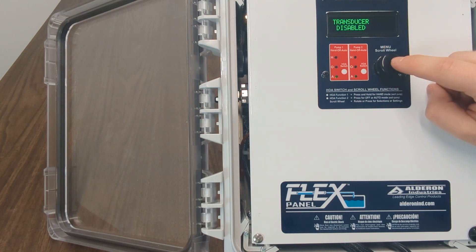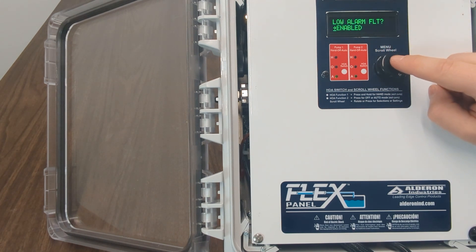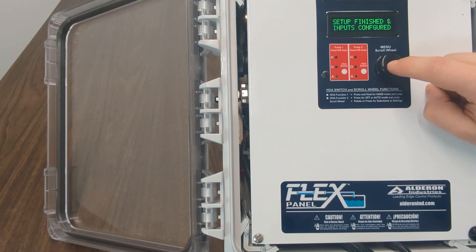After that, we will disable the transducer by selecting disabled at the transducer question. Next, the system will ask if we want a low alarm float on input one. Click enable.